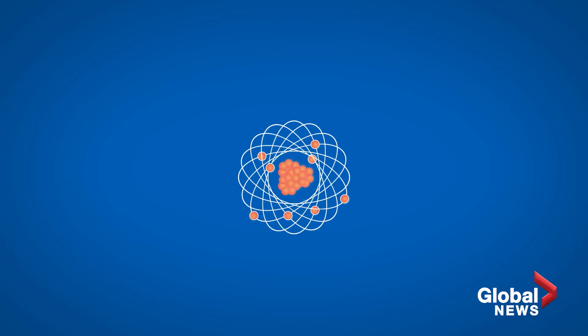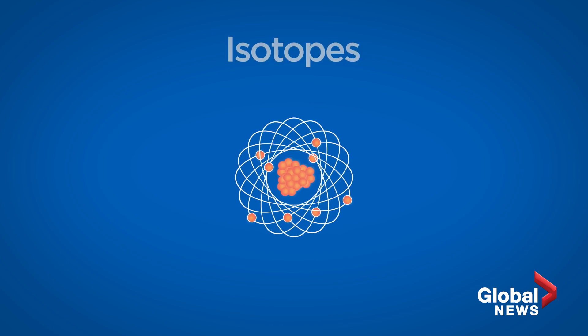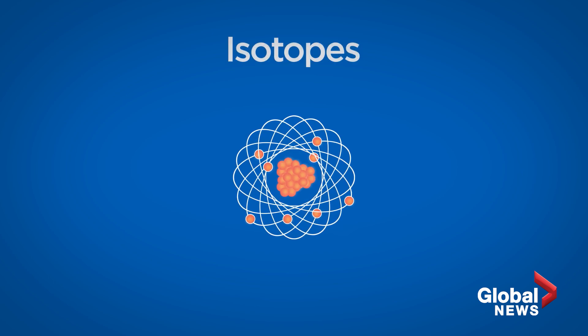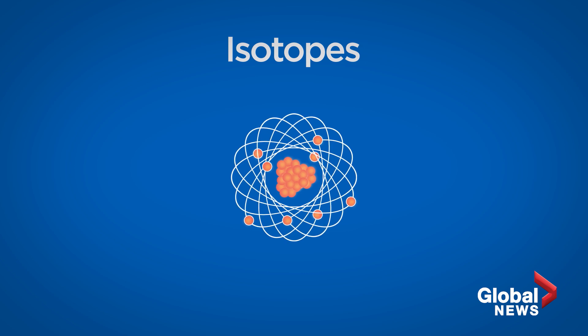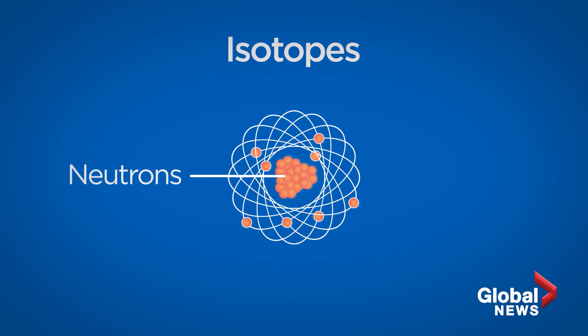Just like other elements, uranium occurs in slightly differing forms, known as isotopes. What makes these isotopes different from one another is the number of neutral particles, or neutrons, in the nucleus.